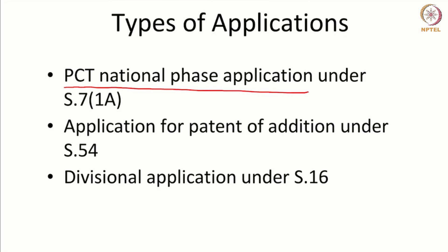The sixth type is a divisional application. A divisional application is normally filed to divide an invention. The law requires that every application should have only one invention. If you file an application with more than one invention, you can voluntarily divide it into separate applications, each covering one invention, or you may be directed to do so by the patent controller. The patent office may point out that your application has more than one invention — this is called the unity of invention. The process of dividing an application wherein you separate the inventions is done by filing a divisional application.